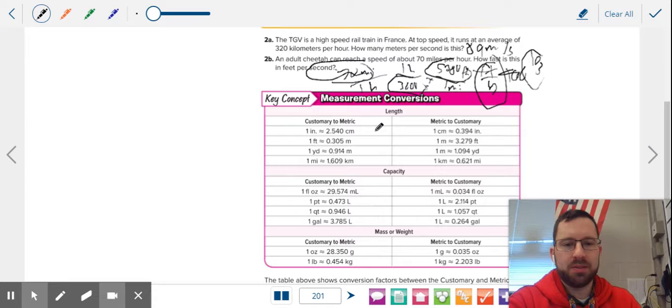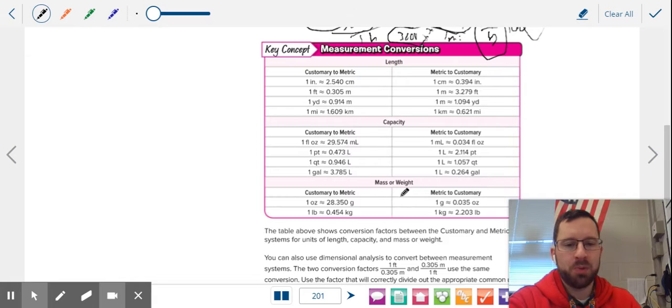We have our measurements in length, our measurements in capacity or liquids, and our measurements in weight or mass. I always recommend to use the one that you're starting with as the one, and then your other one will be the number. Once again, you're going to make a fraction out of this and you're going to line it up.